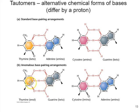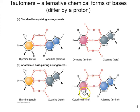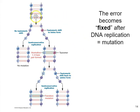If that T-G pairing happens during synthesis, you'll have a G on the other side instead of an A, and if that gets fixed you'll have a mutation. Similarly, cytosine can be in the rare amino tautomeric form instead of the standard, and it will base pair not with guanine but with adenine. So we see changes in the base pairing rules as a result of tautomeric shifts.